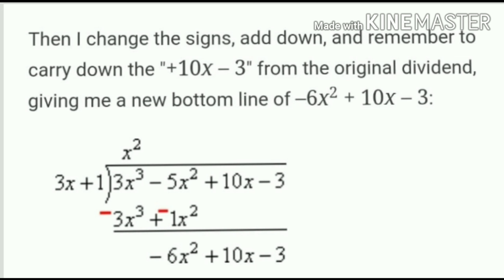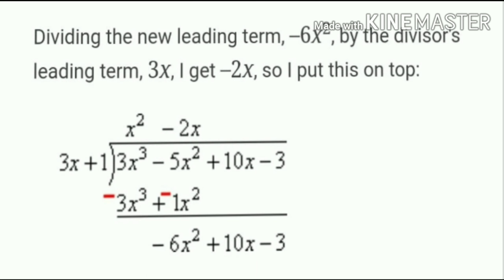After cancellation, -5x² minus x² gives -6x². We bring down the remaining terms +10x and -3. So the new expression to work with is -6x² + 10x - 3. The leading term is now -6x².